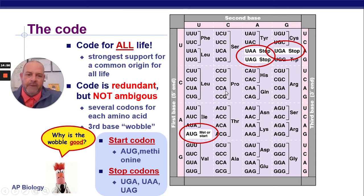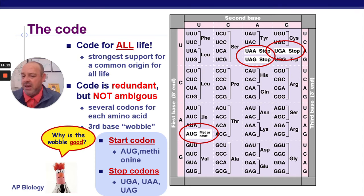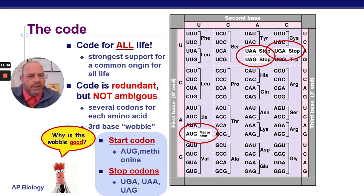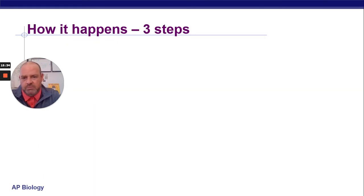Why is the wobble good? If there's a mutation in that third position — say it's supposed to be ACU but you got ACA — does that matter? Nope. The wobble actually helps you get away with some mutations that would have no effect on the protein. You might have a mutation there, but you wouldn't notice it because of that wobble base.